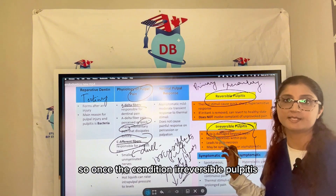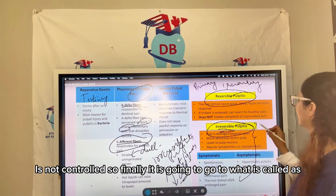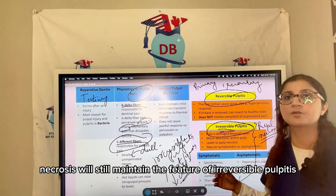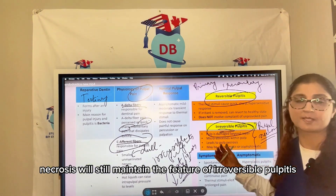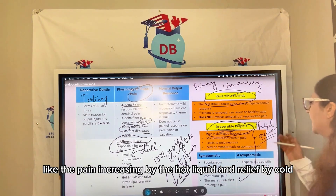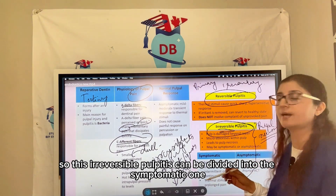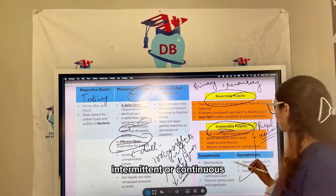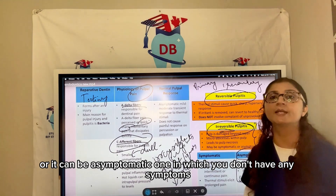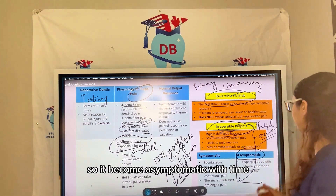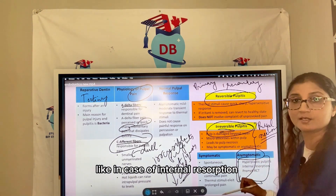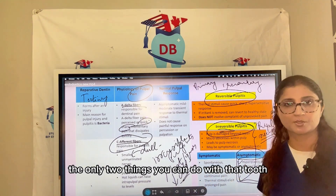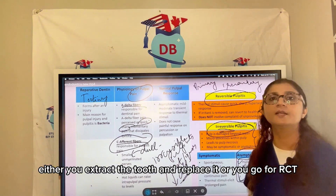If irreversible pulpitis is not controlled, it progresses to pulpal necrosis. The starting stage of pulpal necrosis still maintains features of irreversible pulpitis, like pain increasing with hot liquids and relief with cold. Irreversible pulpitis can be symptomatic — with spontaneous, unprovoked, or lingering pain — or asymptomatic, a long-standing chronic condition seen in internal resorption or hyperplastic pulpitis. Once the pulp is necrotic, you can either extract the tooth and replace it, or perform root canal treatment (RCT).